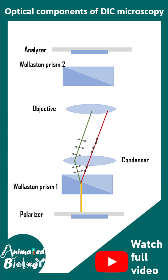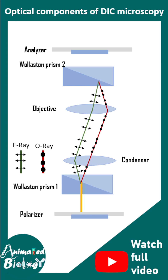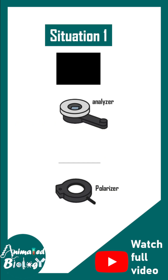If you want to know more, there is a detailed video on this. Eventually the two beams get recombined by Wollaston prism 2 and pass through the analyzer. This is the overall ray diagram for DIC microscopy.